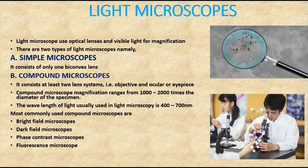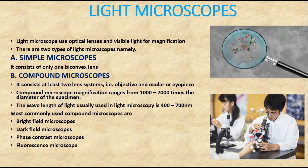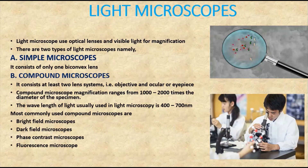Under the simple microscope, only one convex lens is used for magnifying the object. Coming to the compound microscope, at least two lens systems must be present — that is, more than one lens — and these compound microscopes have a complex system of arrangement of lenses that help in higher magnification and better resolution.